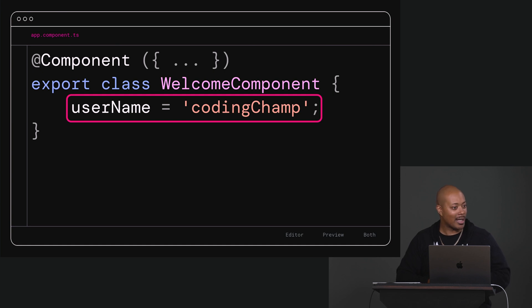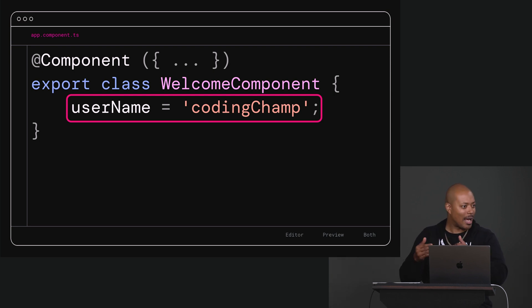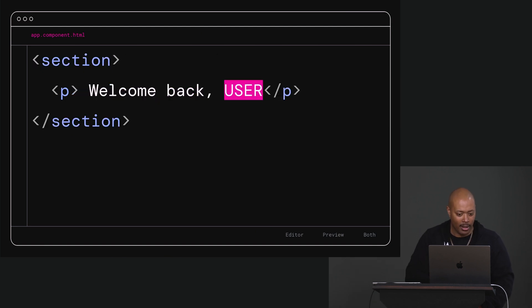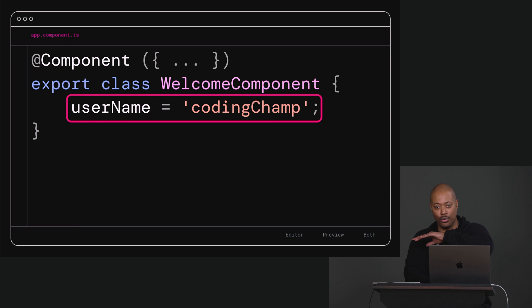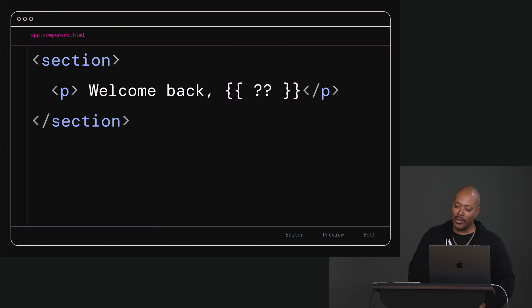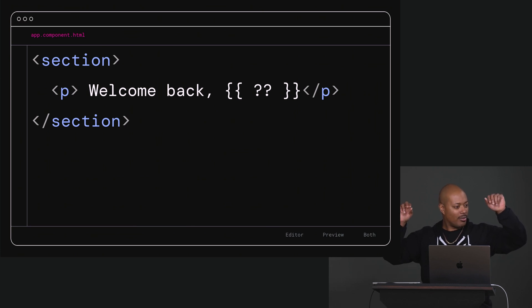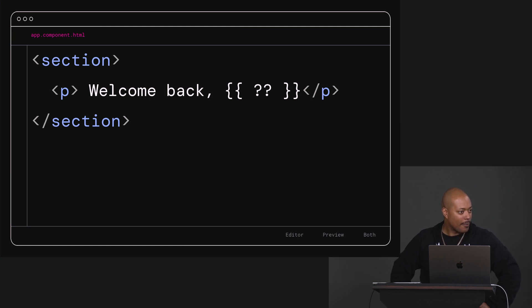So type inference in TypeScript is really natural and very good. It can infer every single type — especially primitives — and if your type signatures are set up properly from functions that return things, it'll be able to do type inference and know what type it is. You don't have to write the type there, but you could if you wanted to. So now we have our property 'username', and we want to go back into our template. How do we link the username to our template?